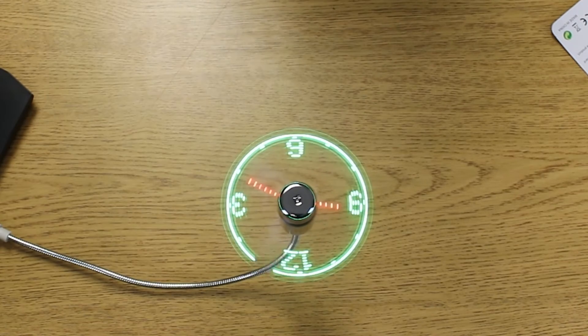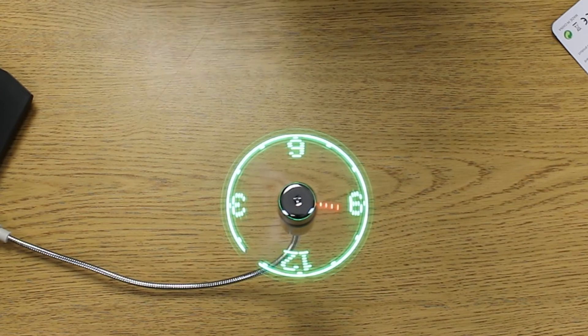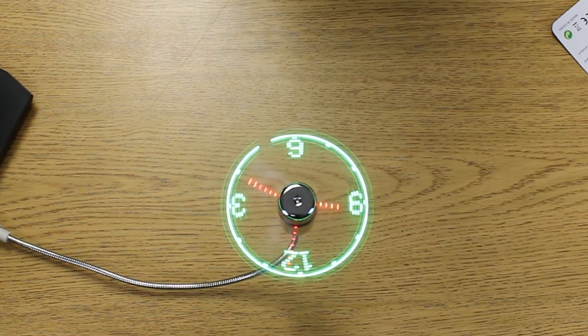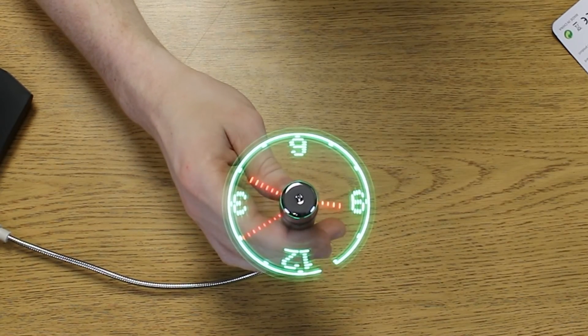After you set it to the correct time, just wait for six seconds and it will go back to normal. As you can see, our thing is set up. Now you can look at the time, get a nice cool breeze, and just click it again to turn it off.